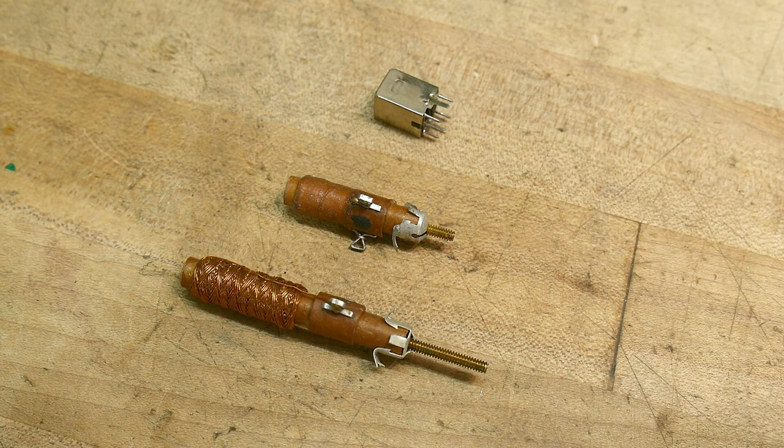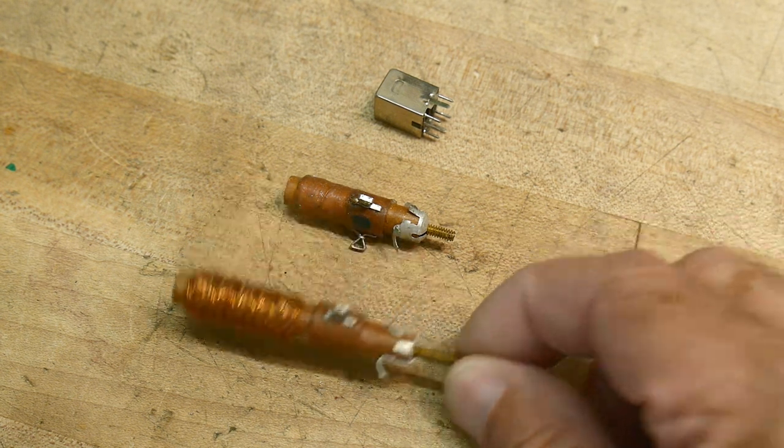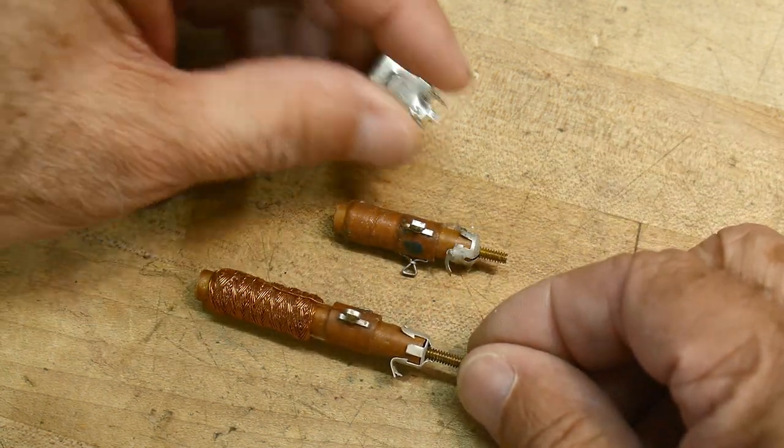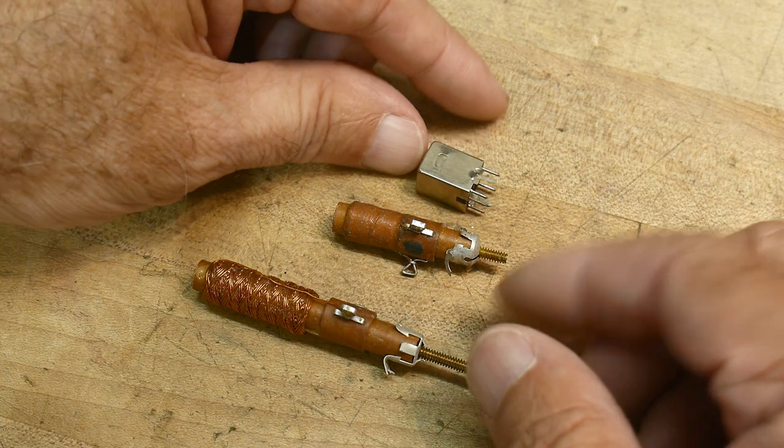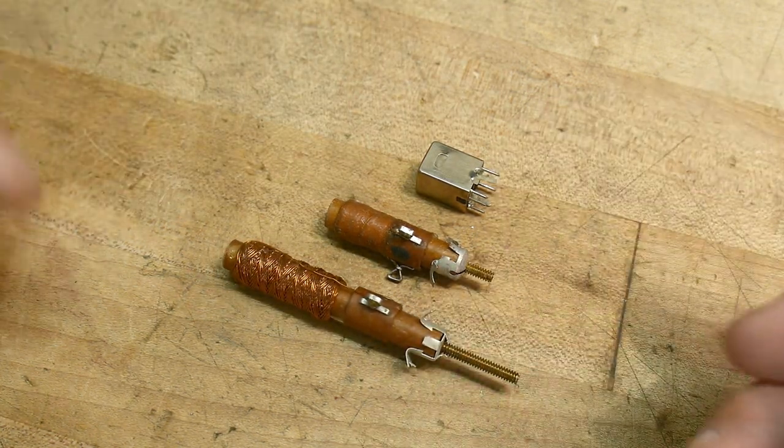But I wanted to talk about these types today. So if you open up an old radio, you might see things that look like this, or look like this, maybe look like this. These are all variable inductors. And they're all exactly the same principle.